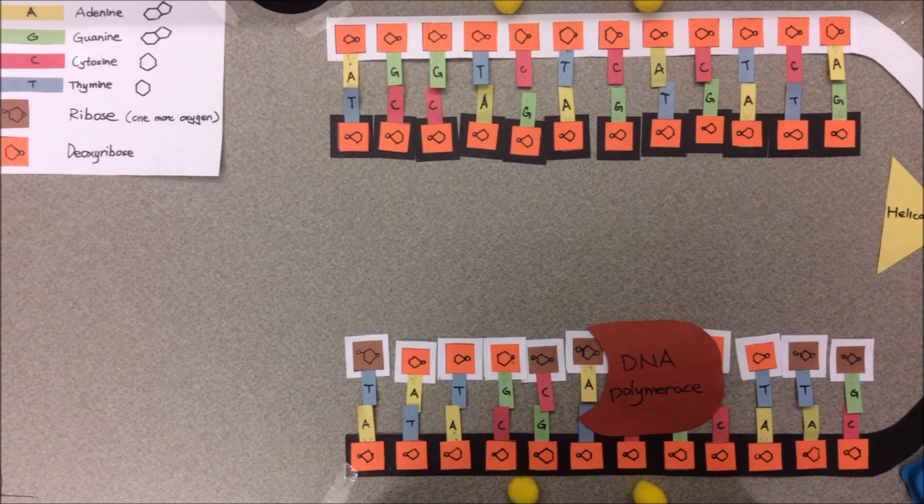While each individual segment is replicated away from the replication fork, each subsequent Okazaki fragment is replicated more closely to the preceding replication fork than the fragment before. Each subsequent Okazaki fragment starts closer to the replication fork and continues until it meets the previous fragment.